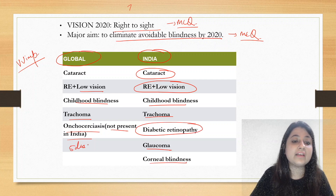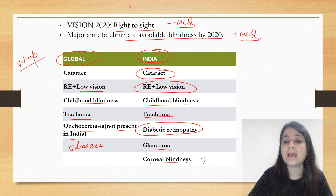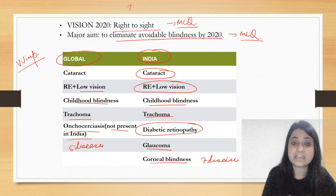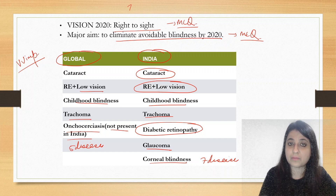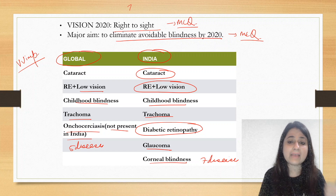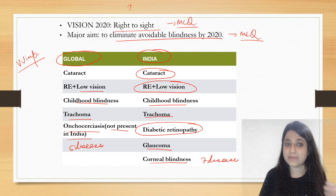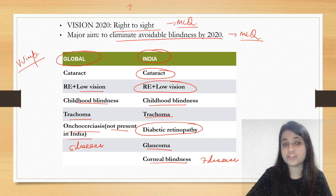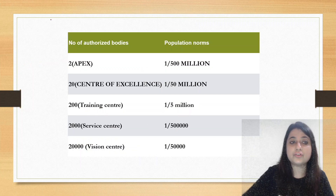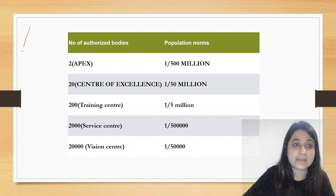Globally there are five diseases; for India there are seven diseases. Regarding trachoma in India: although we have eliminated infective trachoma, we have not eliminated focal trachoma, which is why it remains on the list. Onchocerciasis is not present in India, so it is not included. The additional India-specific diseases are diabetic retinopathy, glaucoma, and corneal blindness. This is very important.